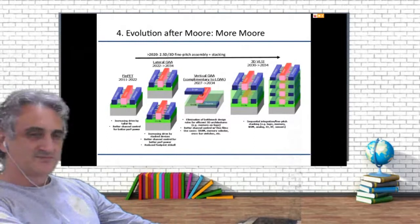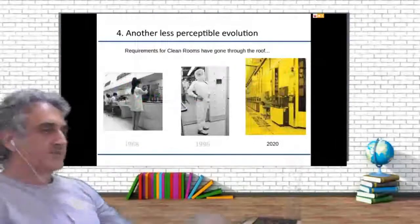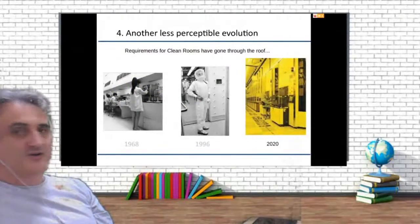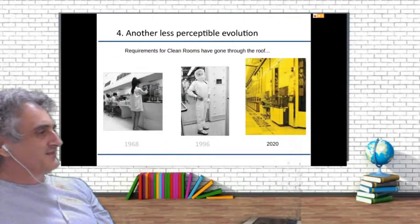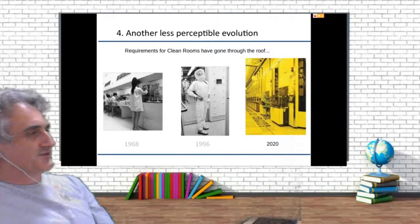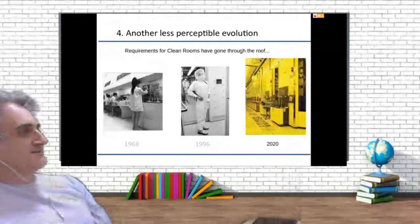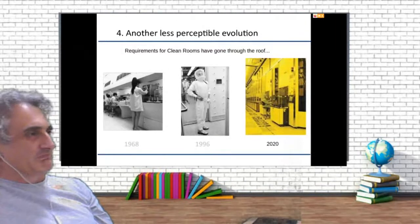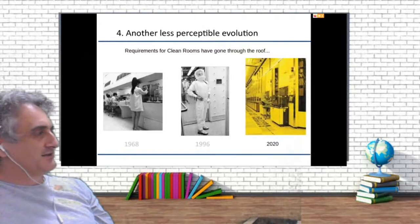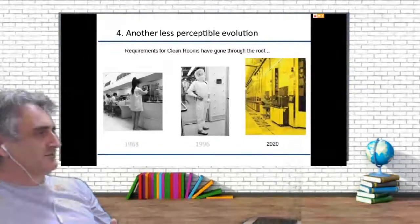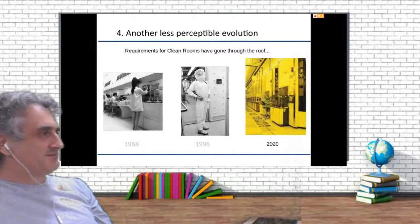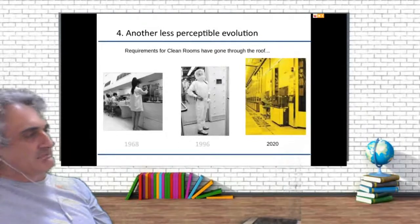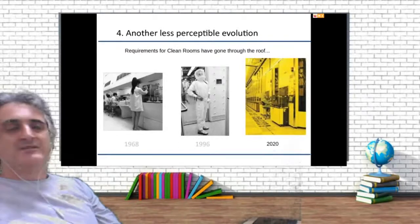Just to show you the evolution of clean rooms over 50+ years: by the end of the 1960s, people were not very worried about what they wore in the clean room — it was just a normal lab with people's hair and all. By the middle of the 1990s, people started wearing very complex suits in order not to get a single speck of dust into the fabrication processes.